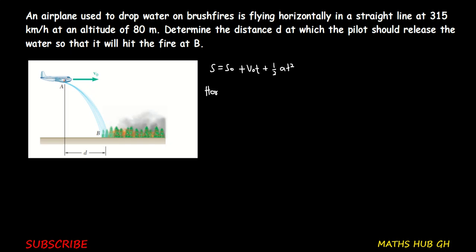For the horizontal motion of the water, we need the initial position X₀ and then the final position X. We are going to let the final position of the water be D, and then the initial position of the water be 0. So it will move horizontally from X₀ equals 0 to D.